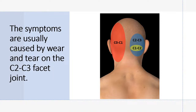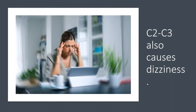The symptoms are usually caused by wear and tear on the C2-3 facet joint. I have here, off to the right, the pain referral patterns for the upper neck facet joints. You can see that C2-3 tends to refer pain in a little bigger swath than C1-C2 to the back of the head. C2-3 can also cause dizziness, imbalance, or vertigo — that's been well-documented.